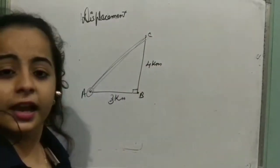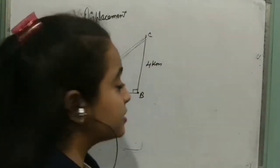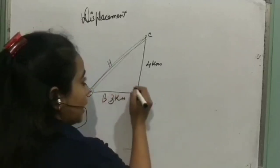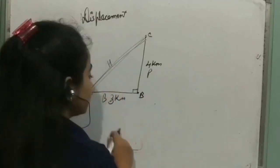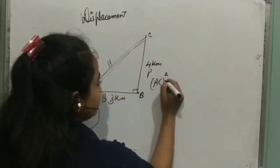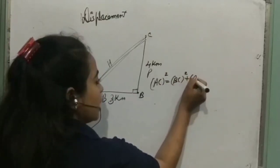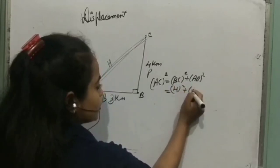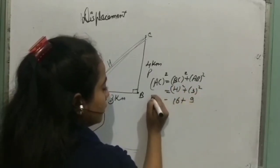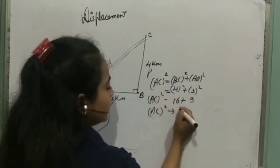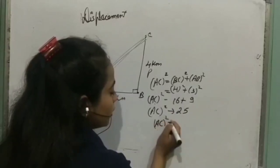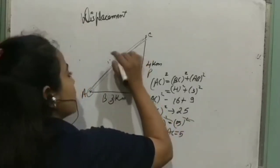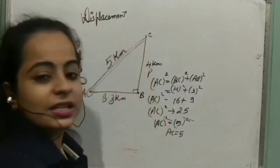This is a right triangle, so we apply the Pythagorean theorem. AC² equals BC² plus AB². So AC² equals 4² plus 3² equals 16 plus 9 equals 25. Therefore AC² equals 25, which means AC equals 5. So the displacement is 5 km. I hope you understood displacement.